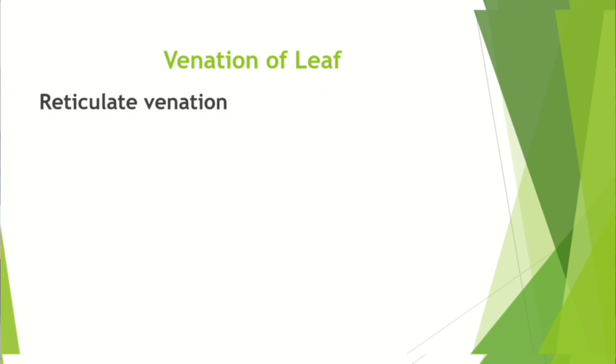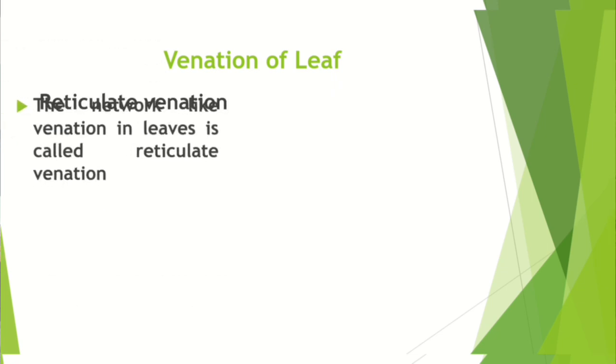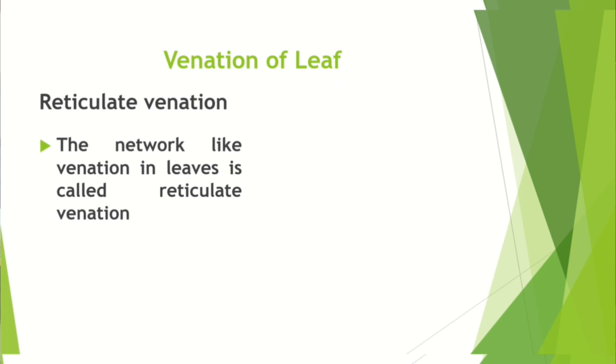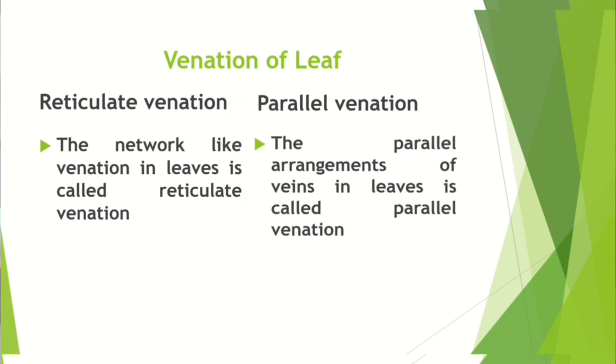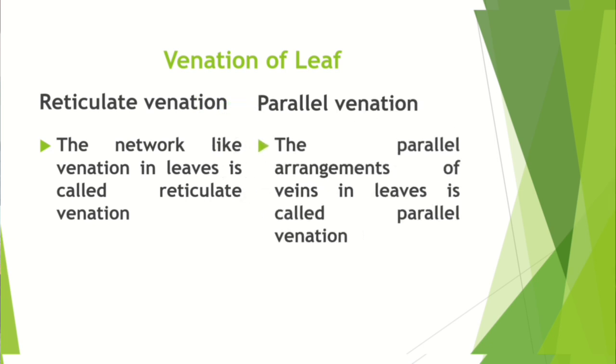Reticulate venation: the network-like venation in leaves is called reticulate venation. Parallel venation: the parallel arrangement of veins in the leaves is called parallel venation. So friends, what are the topics we discussed in this video? Tap root system and fibrous root system, reticulate venation and parallel venation. Thank you for watching my video. Bye!